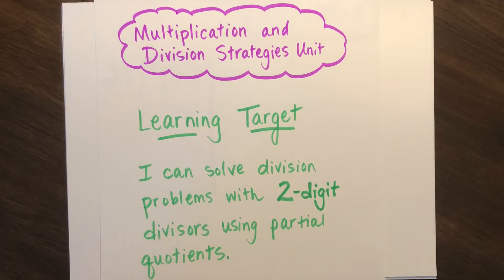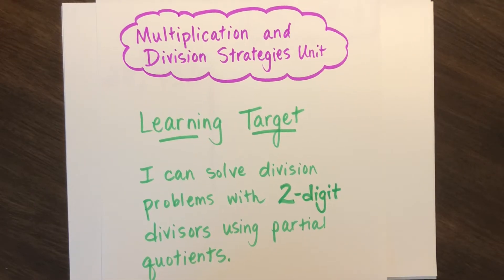This learning target is very similar to yesterday's work. You were dividing yesterday with one-digit divisors using partial quotients, so we're using that same strategy of partial quotients, but instead of a one-digit divisor, we're going to use a two-digit divisor. Keep in mind we're using the same process.